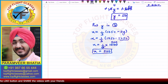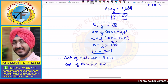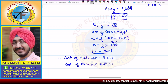Therefore, the cost of each bat is rupees 500 and the cost of each ball is rupees 50. And that is what is asked of us in the question.